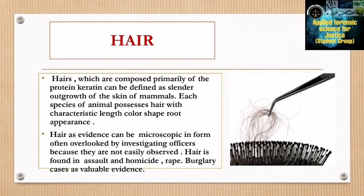Hairs are composed primarily of the protein keratin and can be defined as slender outgrowths of the skin of mammals. Each species of animal possesses hairs with characteristic color, shape, and root appearance. Hair evidence can be microscopic in form and overlooked by investigating officers because it is not easily observed. Hair is found in assault, homicide, and rape cases and is valuable evidence.